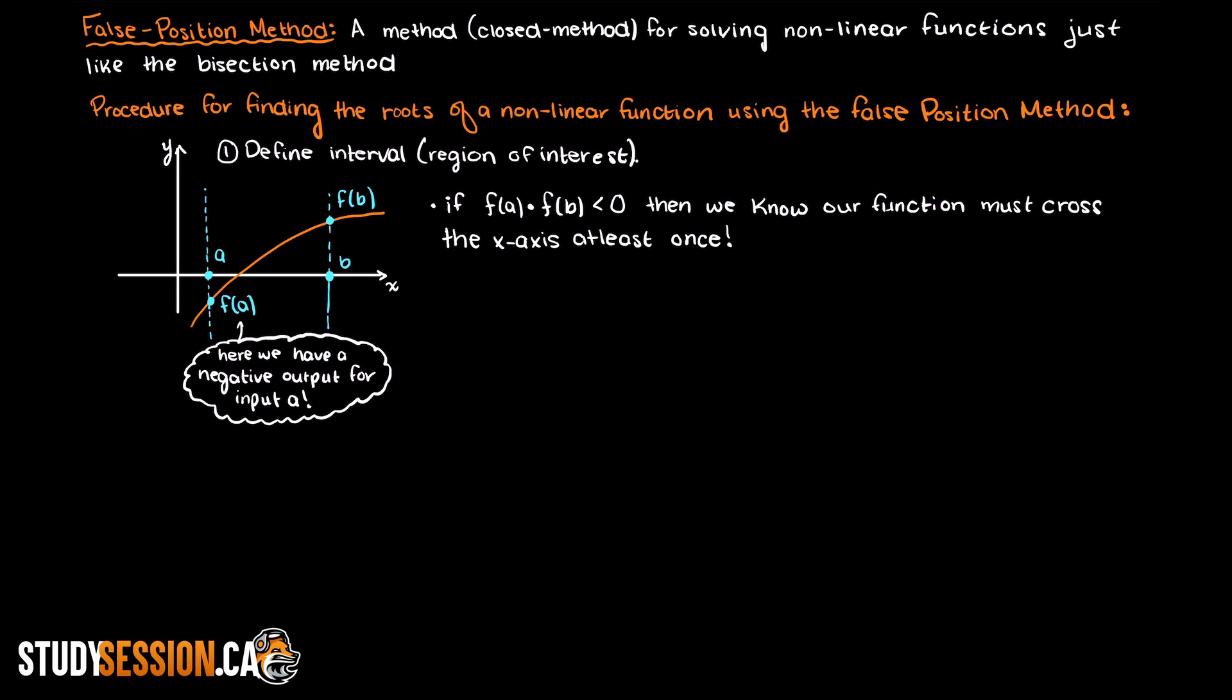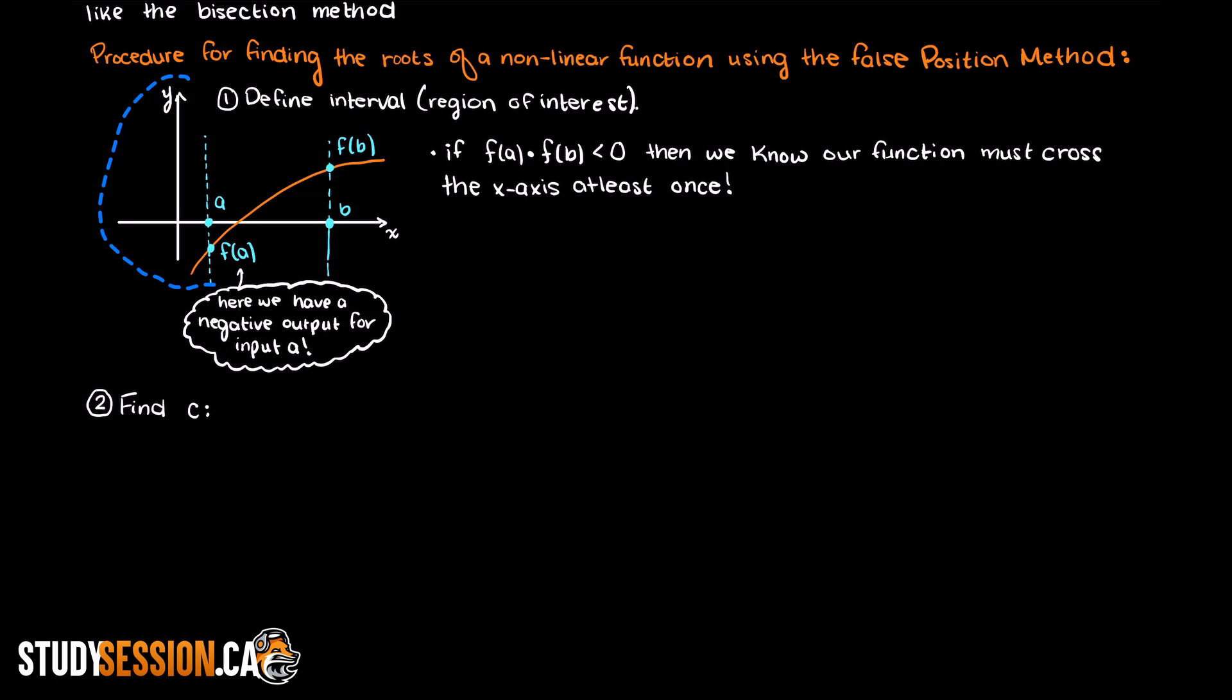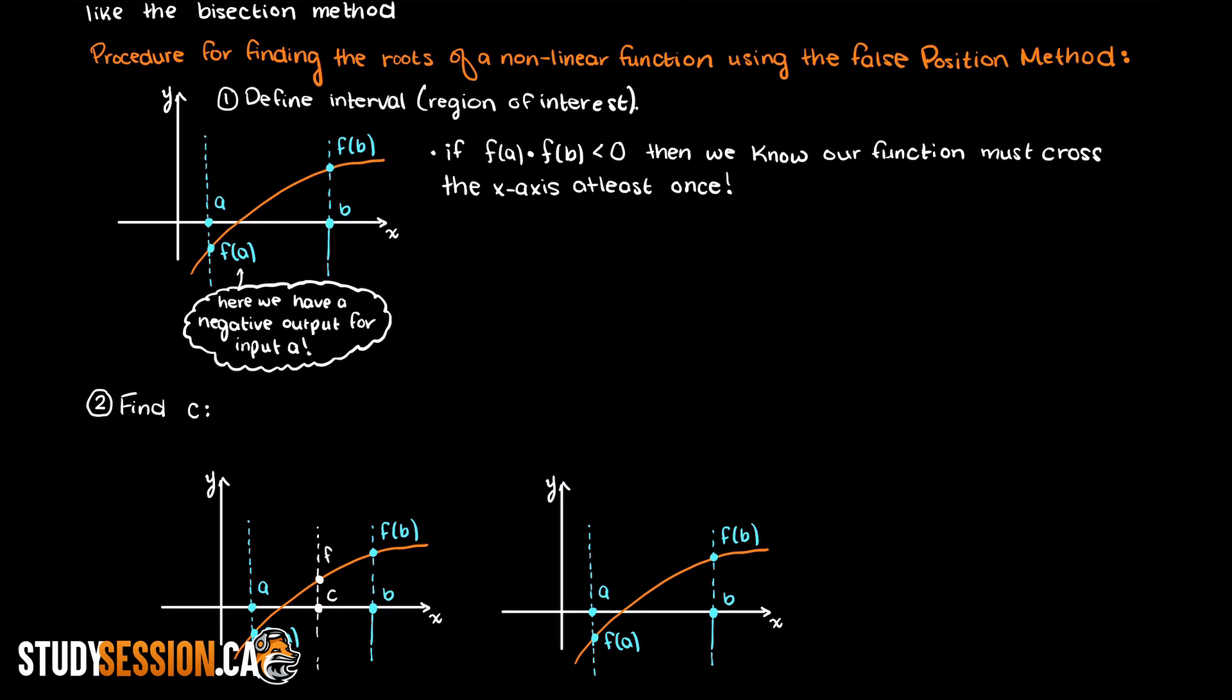Now step 2 is where we differ slightly from the bisection method. If you recall, in the bisection method, we would find the midpoint of our two root boundaries, and see which side of the midpoint contained the root still. Well, this is a very conservative guess.